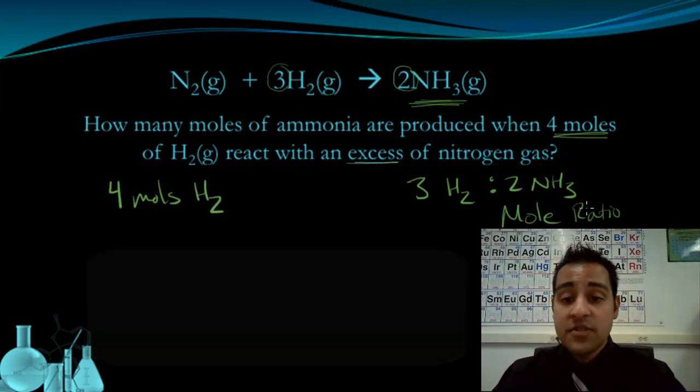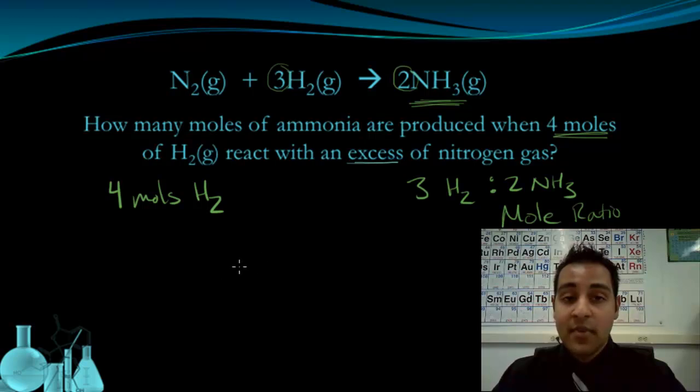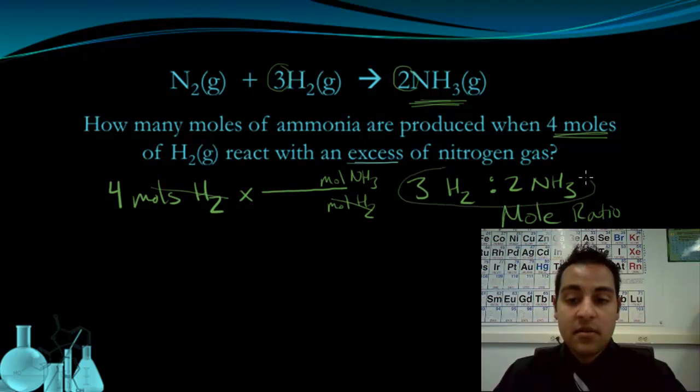Now I can use this mole ratio similar to the way I use dimensional analysis. So I can take this four moles of hydrogen and I can multiply it by a fraction. And on the bottom of the fraction, I'll put moles of hydrogen because that's what's going to divide out. And I want moles of ammonia, so I'll put that on top. Now from this, I know what numbers go with those units. Two moles of ammonia and three moles of hydrogen.